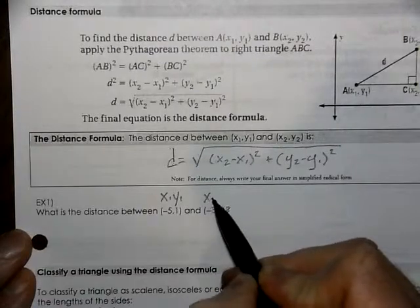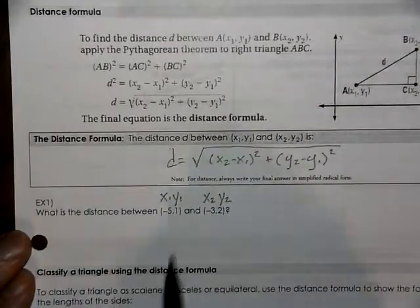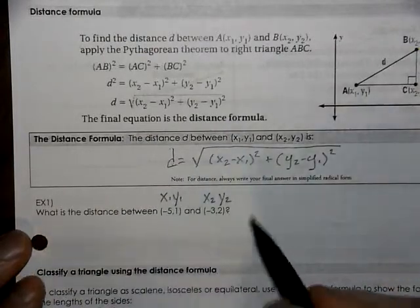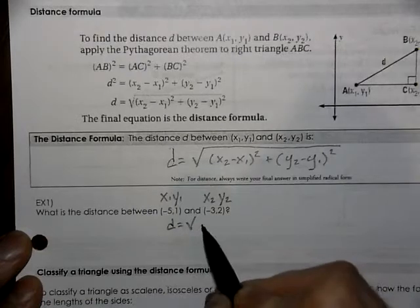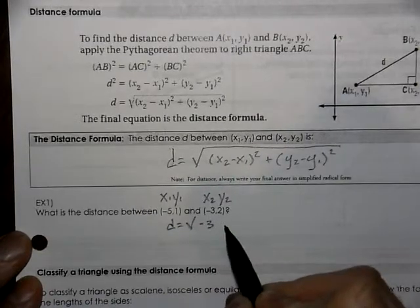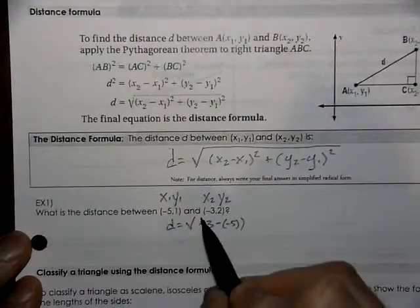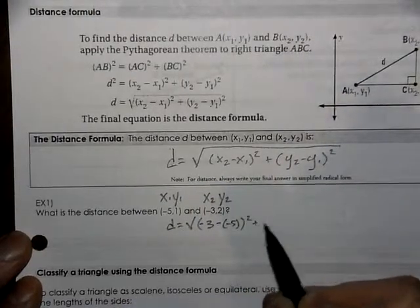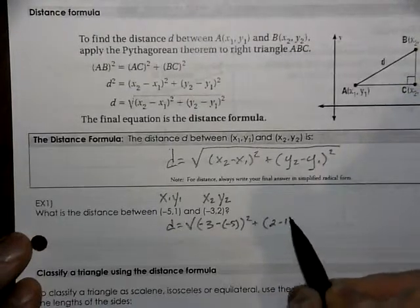So as we start to work with this first example, I suggest to label your points. Your distance is going to be x2 minus x1. Use parenthesis around the negative. y2 minus y1.